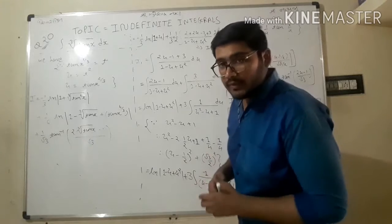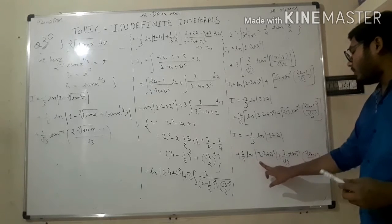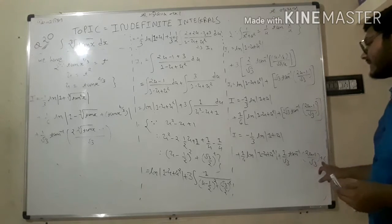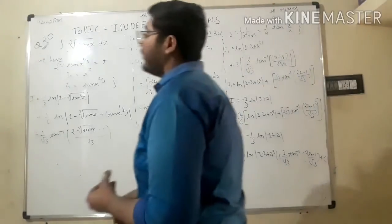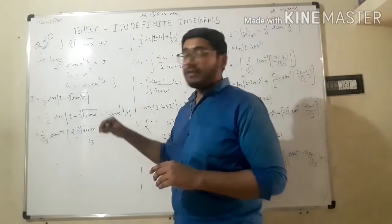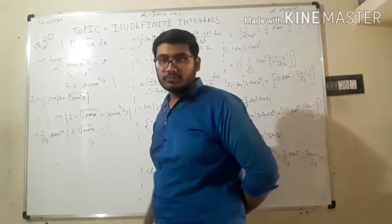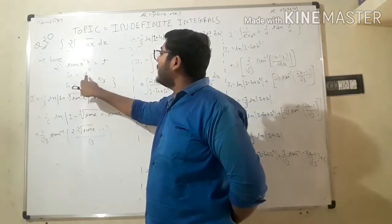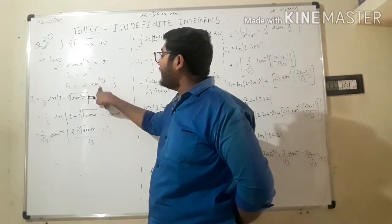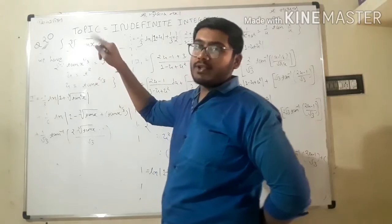The final answer is: i = -1/3 · ln|1+u| + 1/6 · ln|1 - u + u²| + 1/3 · arctan((2u-1)/√3) + C. Recall that tan(x)^(1/3) = t and t² = u, so u = tan(x)^(2/3).